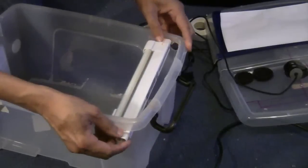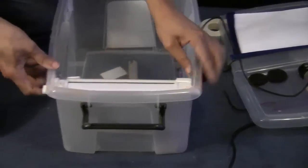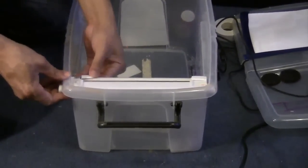Holes were made on each side of the plastic box to accommodate the fluorescent light.